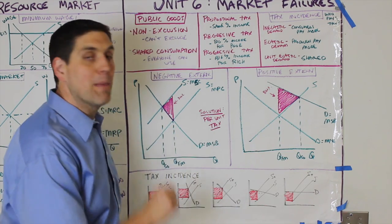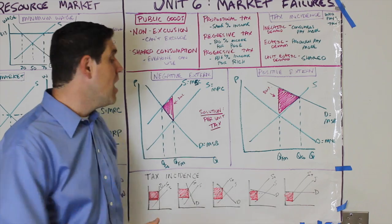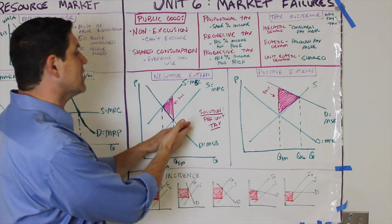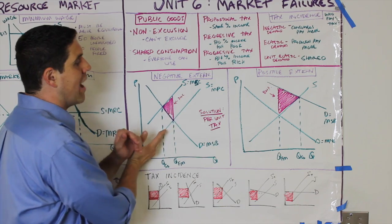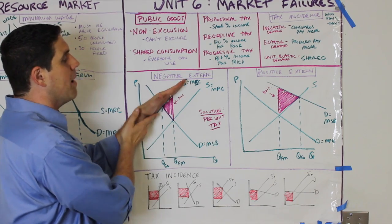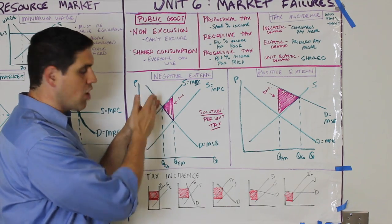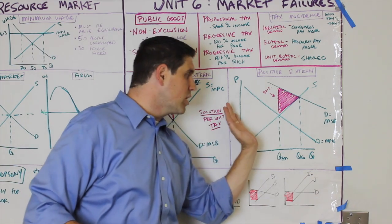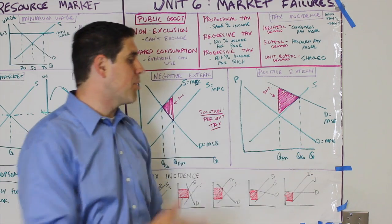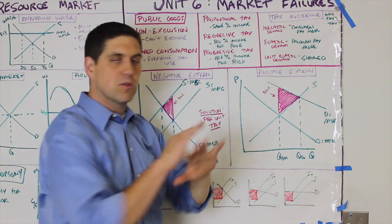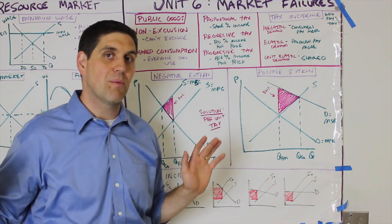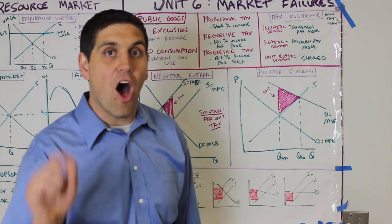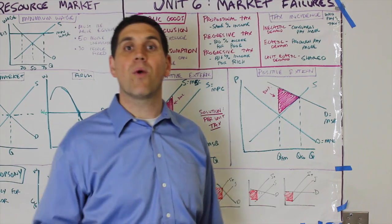The solutions: tax a negative externality and subsidize a positive externality — but remember it must be a per-unit tax, not a lump sum. A lump sum would not affect quantity. A per-unit tax on a negative externality shifts private cost up to equal marginal social cost, solving the problem. A per-unit subsidy causes producers to increase output to the socially optimal level, eliminating deadweight loss. That's the whole idea of Unit 6 — all of microeconomics summarized.